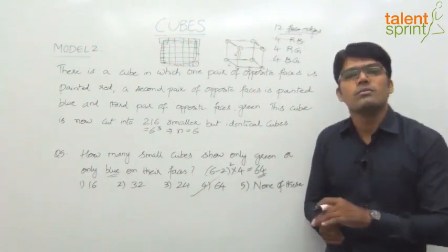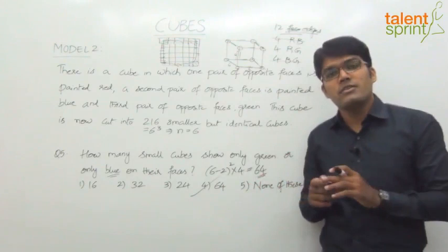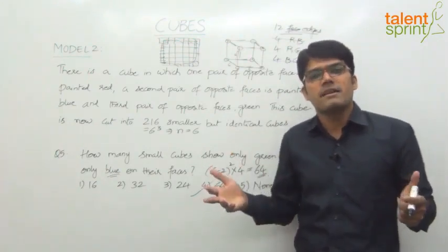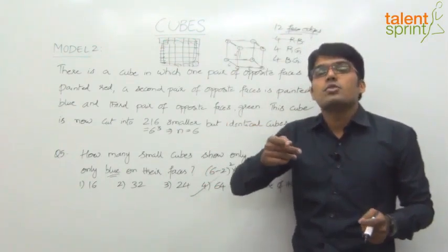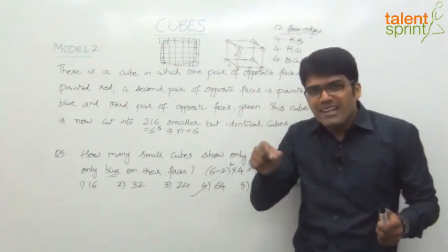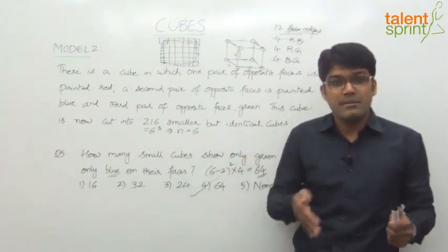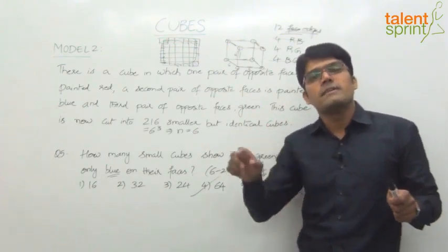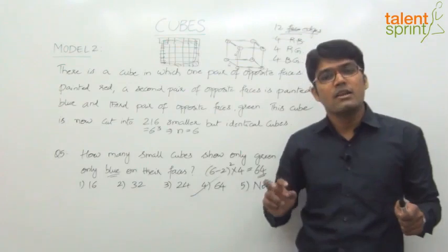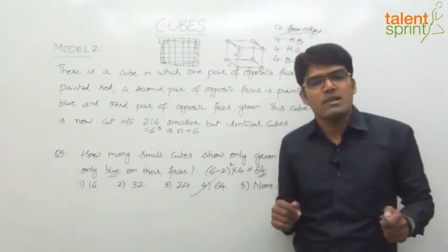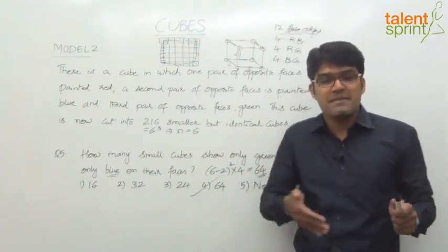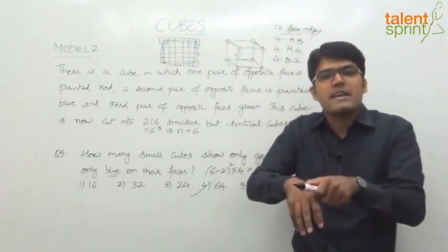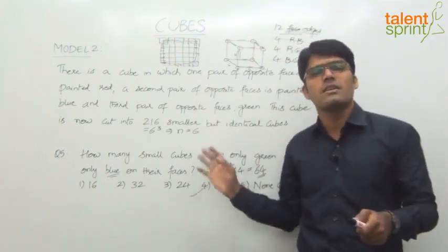Even when different faces are painted in different colors, you go by the same logic: 1 face painted, 2 faces painted, or 3 faces painted. The key formulas are: 3 different faces painted — corners, always 8. Two faces painted — edges, which is n minus 2 into 12. One face painted — surfaces, which is n minus 2 squared into 6 faces. No face painted — inside, which is n minus 2 whole cubed. Going by the same logic, you can answer questions based on colors as well.